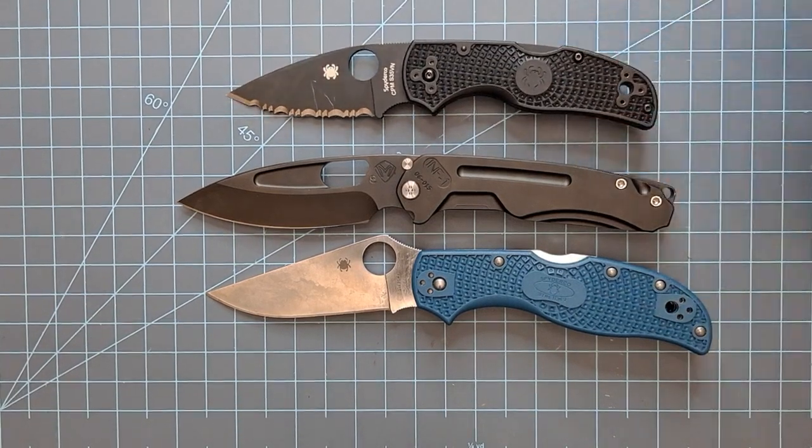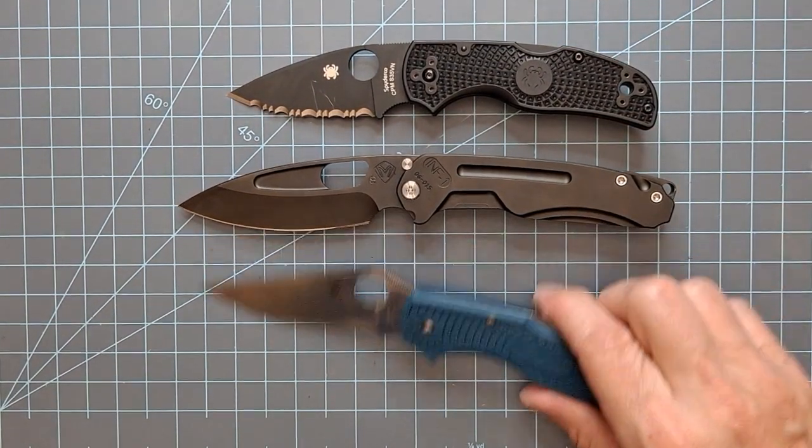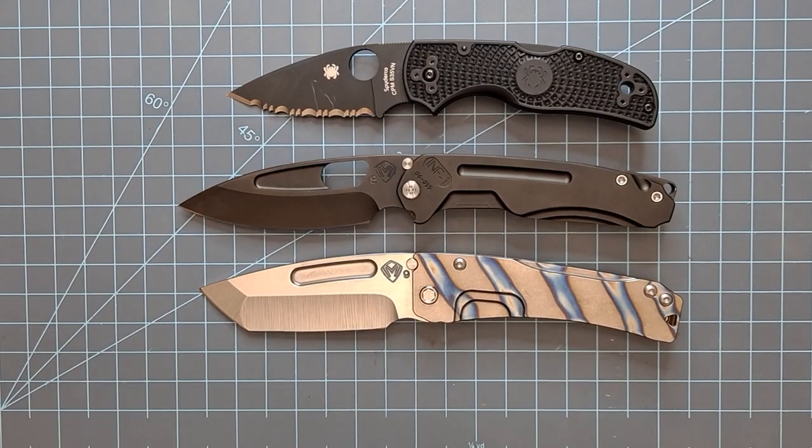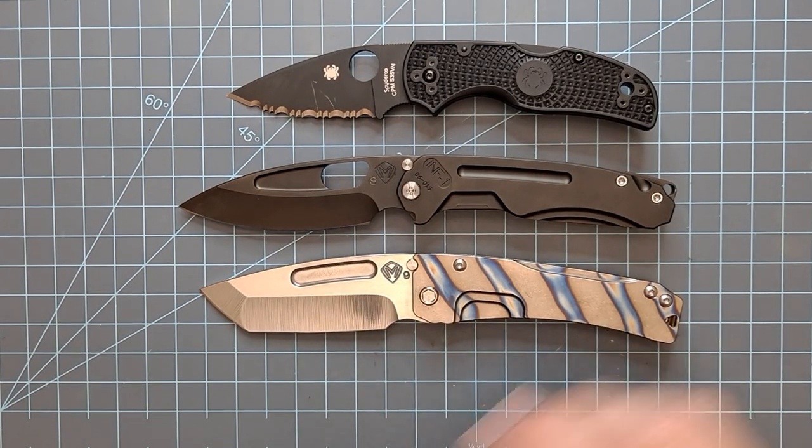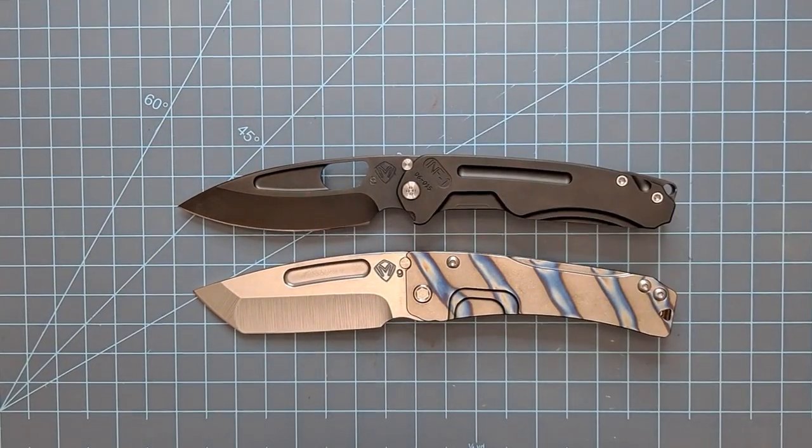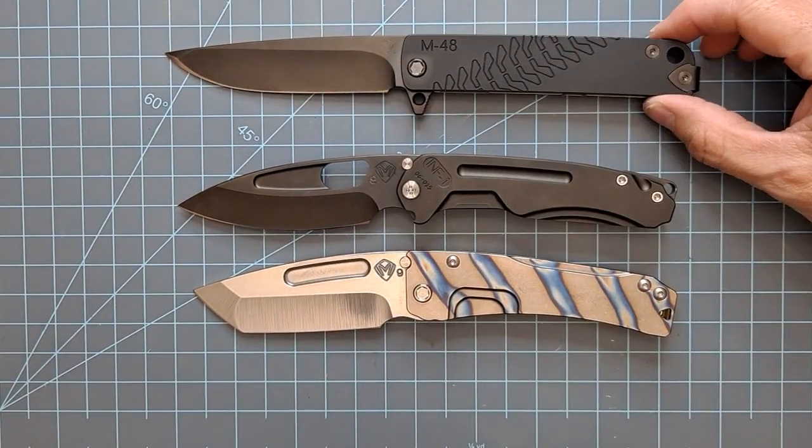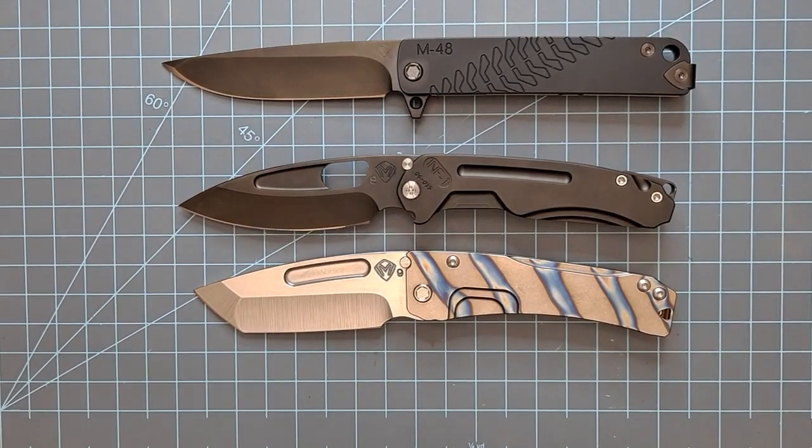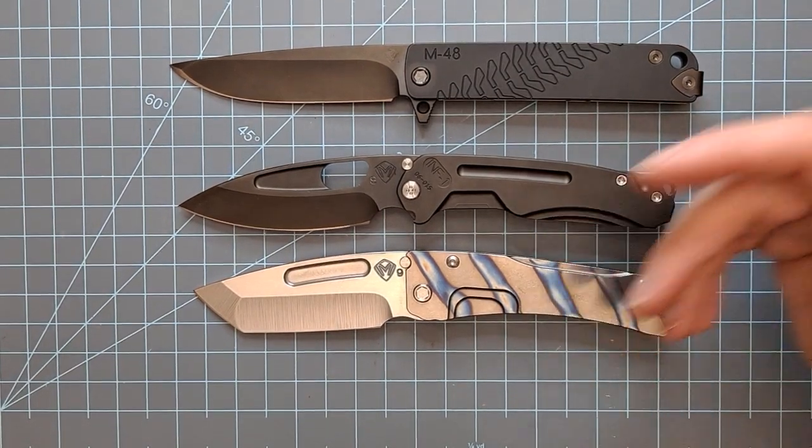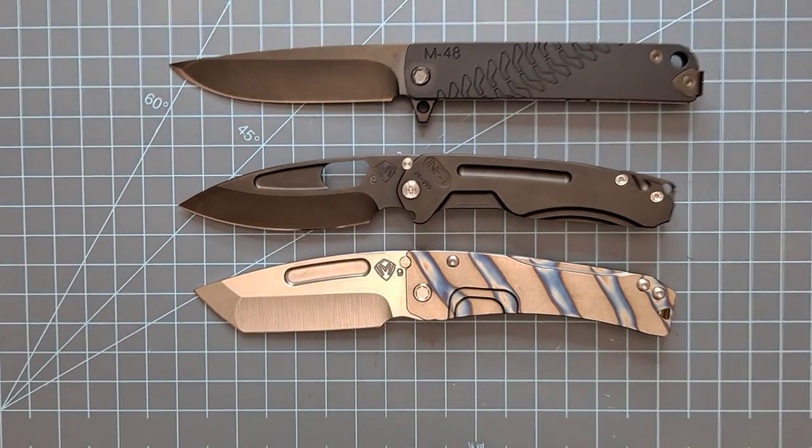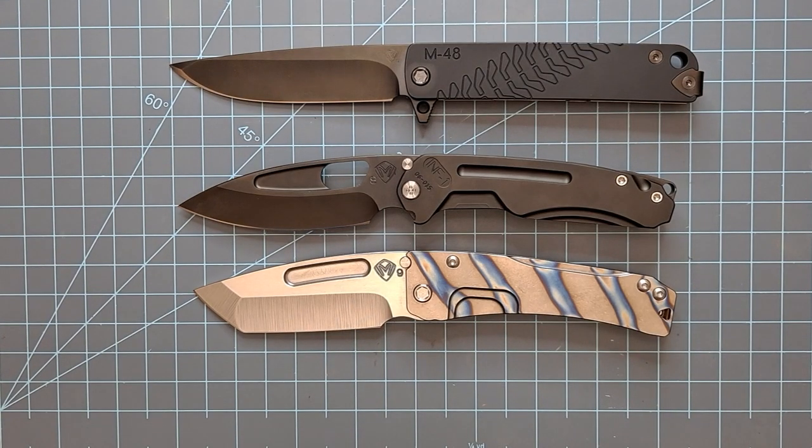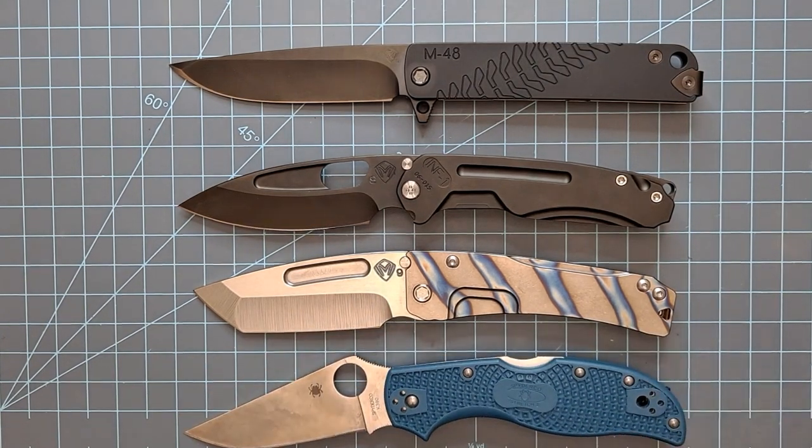There is the Spyderco native five full serrated right there. And let's see, there is the slim midi from Medford knives. So that's a good one right there to do a size comparison, because if you're in the market for a Medford, that's on the smaller size, you might be looking at those two right there. And then a knife that I did a review on just about a week ago is that Medford M48. So these are three knives right here, where if you were in the market for a Medford and you didn't want a Praetorian or a TFF or something like that, or a full size Marauder, you might be looking for one of these smaller knives that they make.